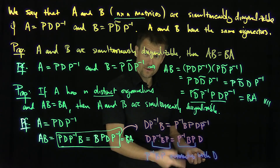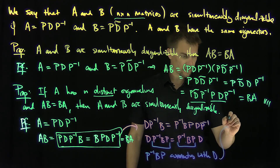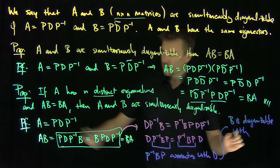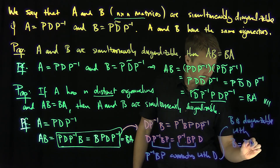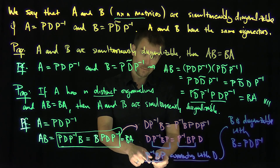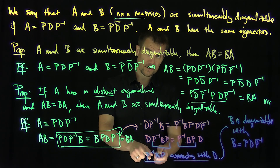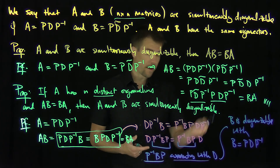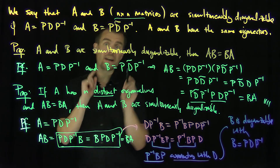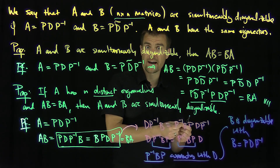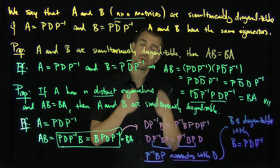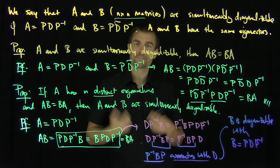If P inverse B P commutes with a diagonal matrix D, then it is itself diagonal, which forces B to be diagonalizable with the same eigenvector matrix P. This proves that A and B are simultaneously diagonalizable. So with the extra assumption of n distinct eigenvalues, commutativity implies simultaneous diagonalizability — and simultaneous diagonalizability always implies commutativity. This is as close as we can get to a characterization of when two matrices commute under matrix multiplication. Thank you very much.